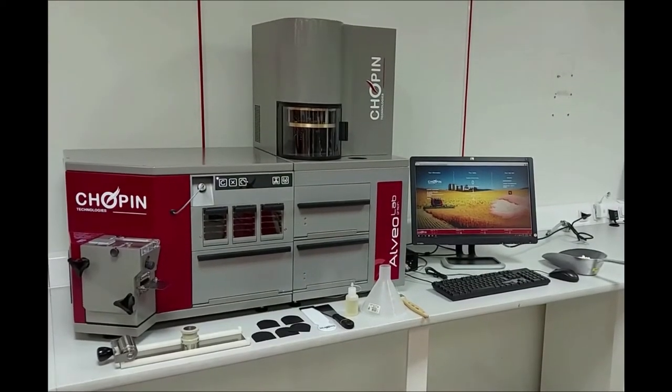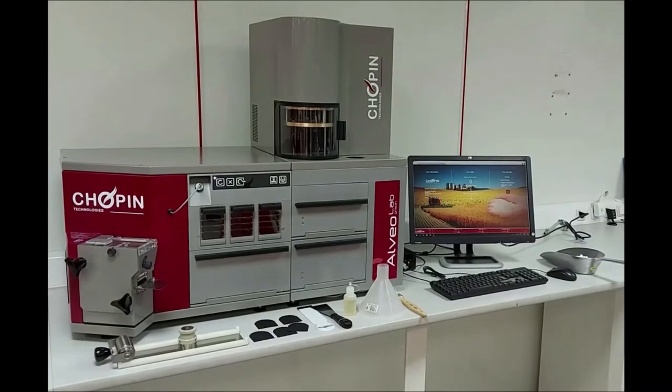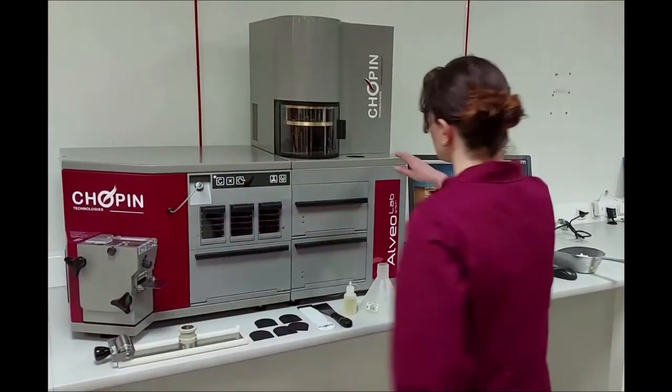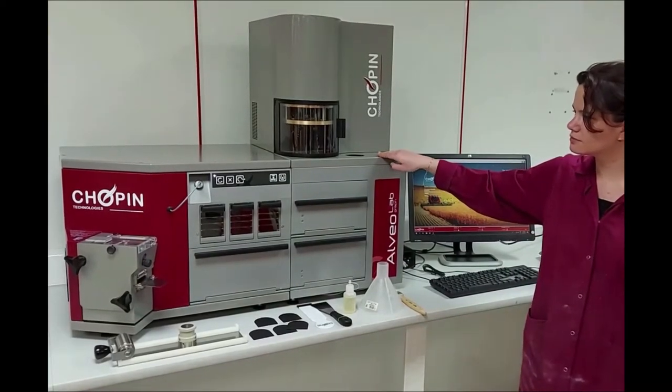The alveolab is always composed of two inseparable parts, the kneading machine for dough sample preparation, and the alveograph itself, where the dough patty is deformed into a bubble until it ruptures.